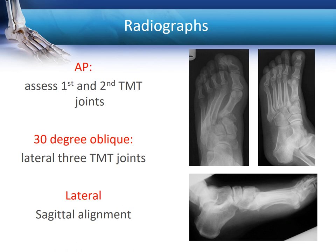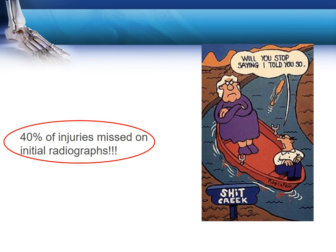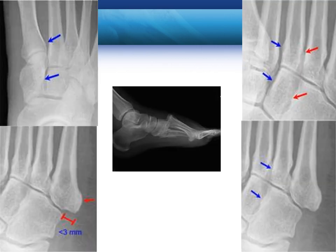Plain X-rays are the mainstay of investigation. On an AP image it's very important to look at the alignment of the first and second tarsometatarsal joints — the first metatarsal to the medial cuneiform, the second metatarsal to the intermediate cuneiform, and the second metatarsal in relationship to the medial cuneiform where Lisfranc's ligament is. An oblique view is very helpful for the lateral aspects and the third, fourth, and fifth tarsometatarsal joints. Although X-rays are mandatory, 40% of injuries are in fact missed on initial radiographs, so a high index of clinical suspicion is required.